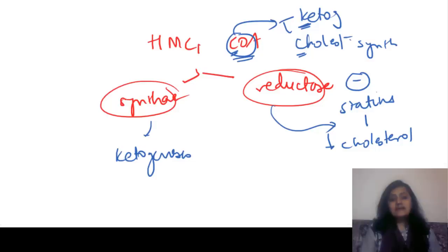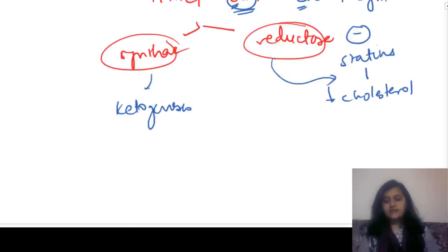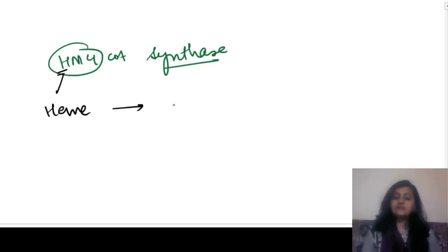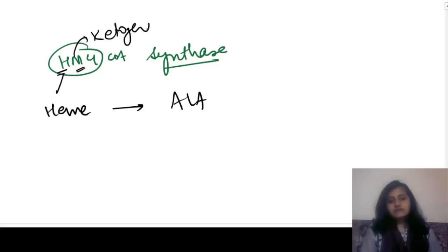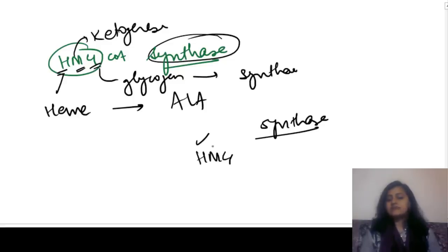Remember the mnemonic HMG for the three cycles where synthase is the rate limiting enzyme. H is for heme synthesis — the rate limiting enzyme is ALA synthase (or ALA synthetase). M is close to K, so ketogenesis — HMG-CoA synthase, not reductase. G is for glycogen synthesis — glycogen synthase. So synthase is the rate limiting enzyme for heme synthesis, ketogenesis, and glycogen synthesis.